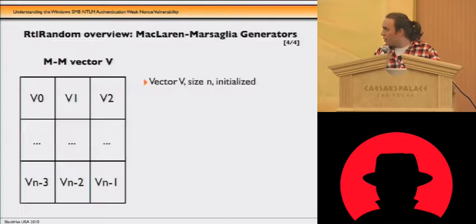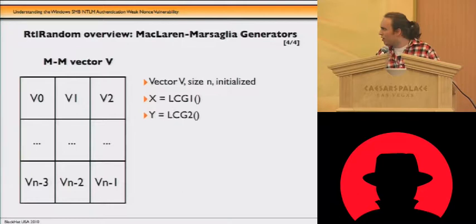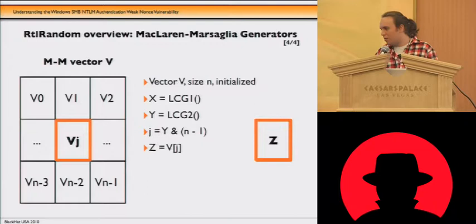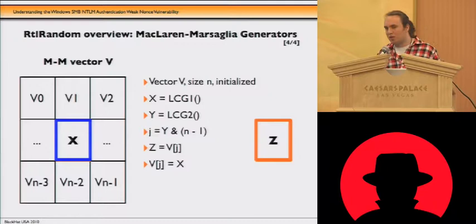There is a demo of what is happening inside: we have a vector of size n which is initialized. First we call the first LCG, then the second LCG. Based on the output of the second LCG, we create an index to address values in the table, fetch the value at that index, and store a new value created with the first LCG. Then we return the previously fetched value.